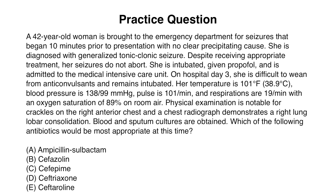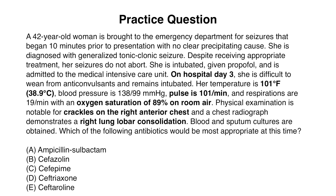This is a two-part question — you need to determine the diagnosis and then the treatment. The patient developed fever, tachycardia, and low oxygen saturation on day three of hospitalization — more than 48 hours in. She has crackles on exam and right lung lobar consolidation on x-ray, meeting criteria for pneumonia — specifically hospital-acquired pneumonia. What differentiates hospital-acquired from community-acquired pneumonia is the organism, so you want to cover for pseudomonas. Of the answer choices, the only antibiotic covering pseudomonas is cefepime. The answer is C.